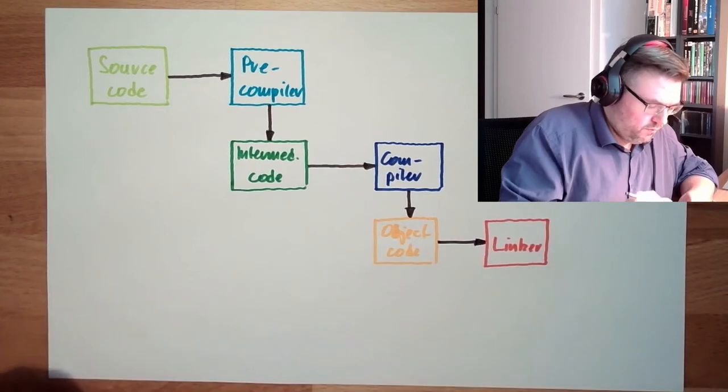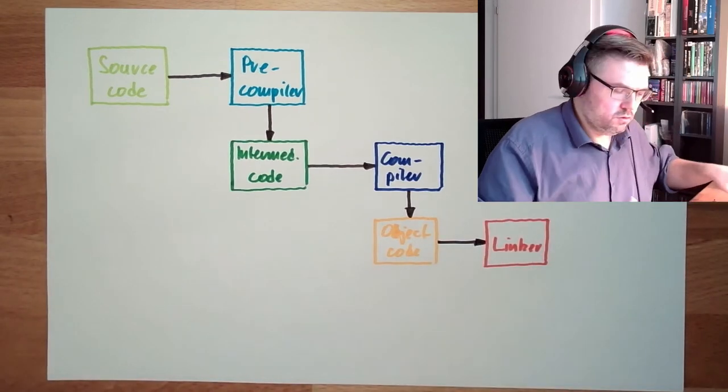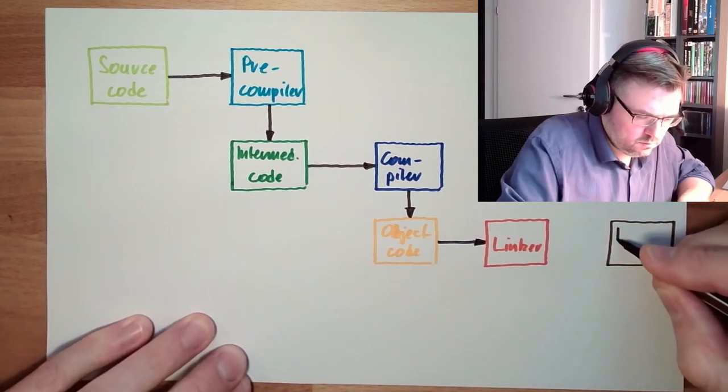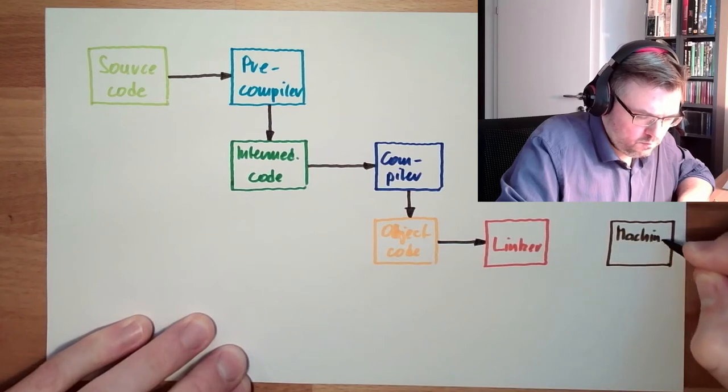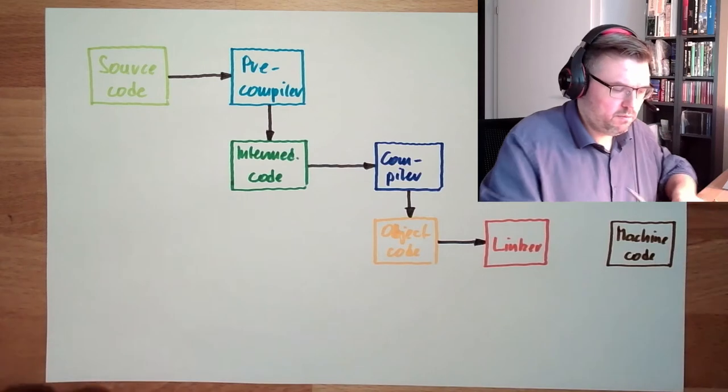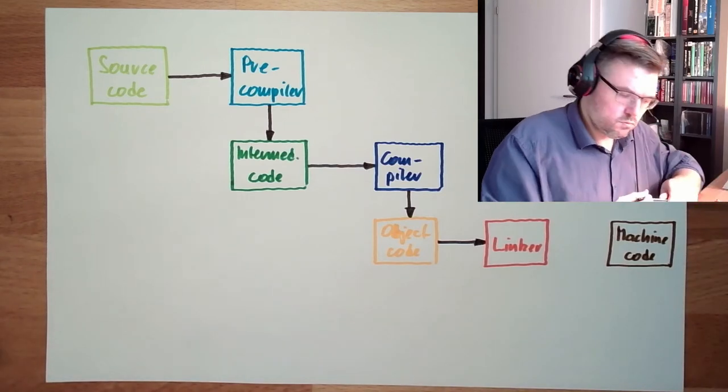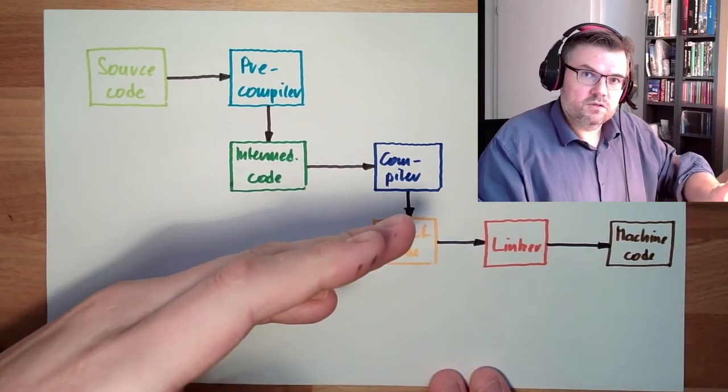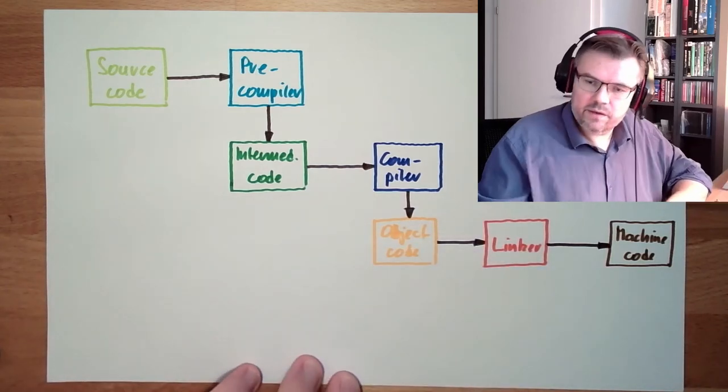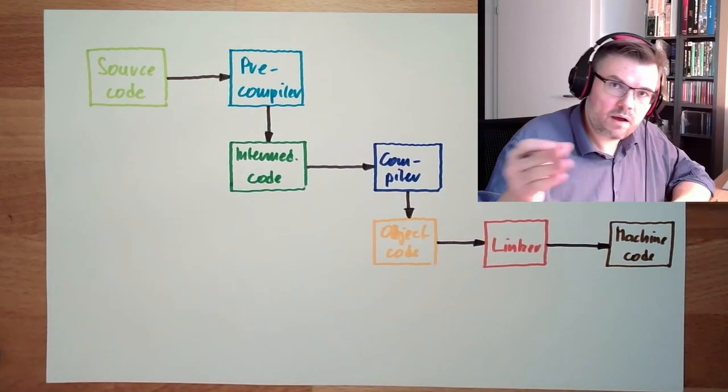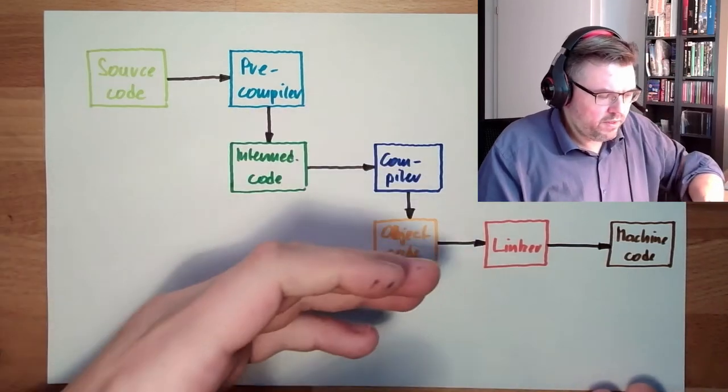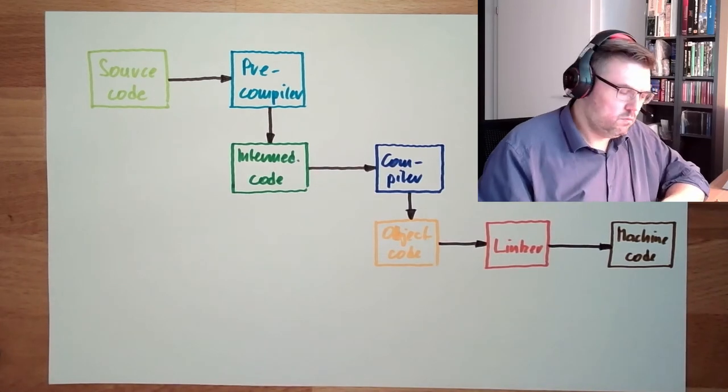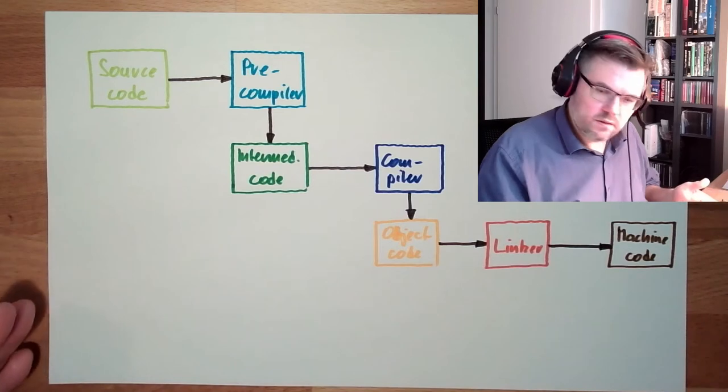And the output of the linker is then the program in machine code. So this is a new file, the program. Machine code. This is a runnable program on our target system. It's not meant that this compiler is running on the target system. If I'm compiling something for a handheld device, Android, iPad, whatever, then the compiler is running and I have to copy the machine code then on the device and this is working. This is the translation part.